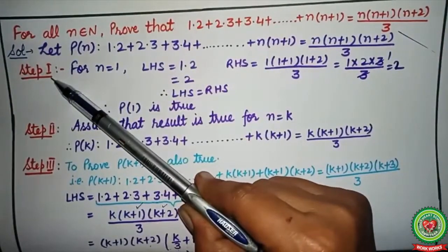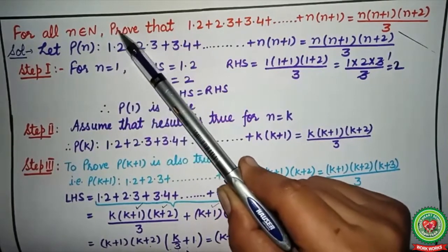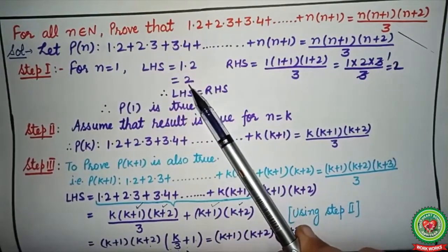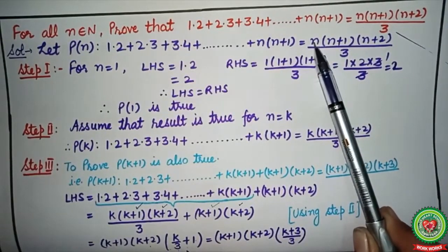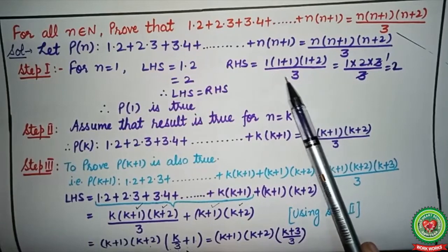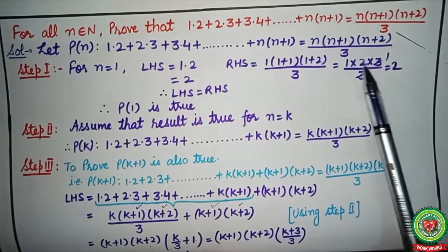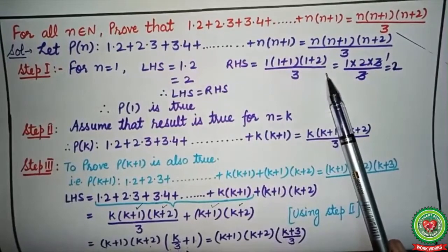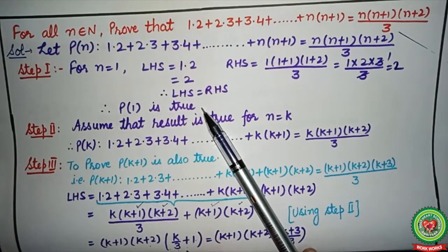For Step 1, put n = 1. The left hand side becomes the first term only, that is 1×2 = 2. On the right hand side, substituting gives 1×(1+1)×(1+2)/3 = 1×2×3/3. The 3 cancels and we get 2. Left hand side and right hand side are both equal to 2, therefore the result is true for n = 1.